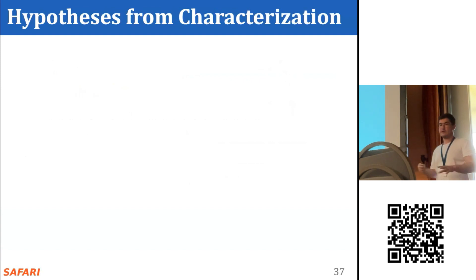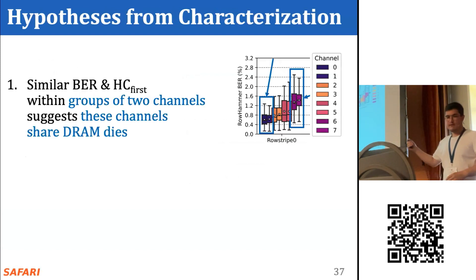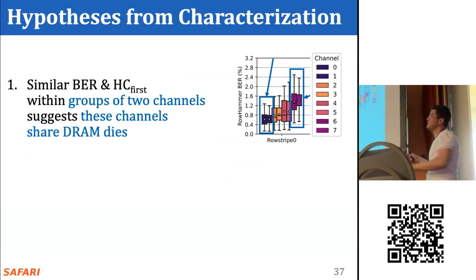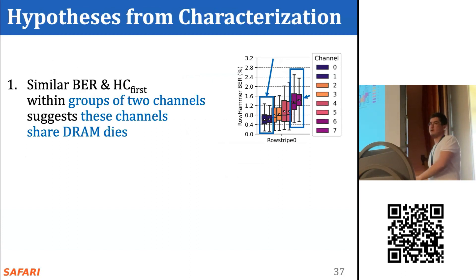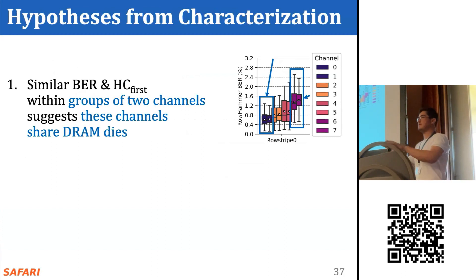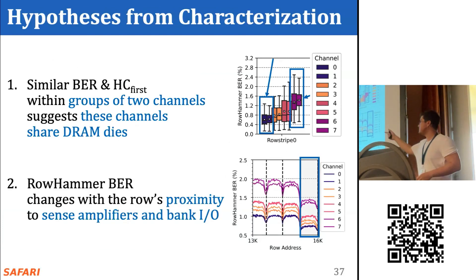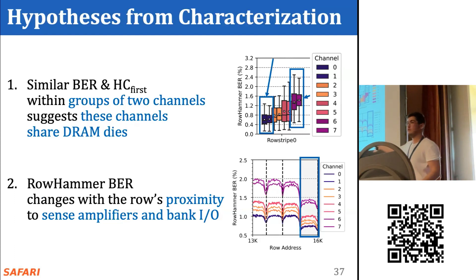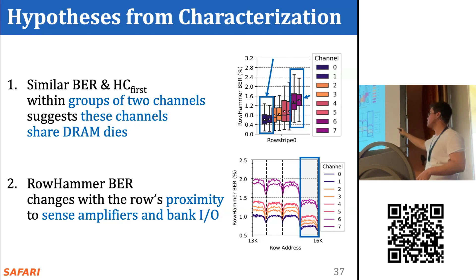We form two key hypotheses from our characterization study. First, we attribute the similarity in bit error rate within groups of two channels to the physical placement of channels in the HBM2 DRAM chip — we think groups of two channels share the same die, suggesting our HBM chip has two channels per die. Second, the RowHammer vulnerability rate changes with the row's proximity to the sense amplifiers, as it is highest in the middle of a sub-array. The significant drop in the last sub-array may be attributed to its proximity to the bank peripheral circuitry.